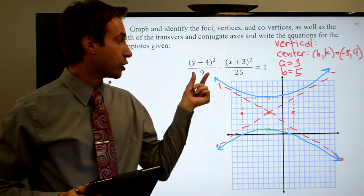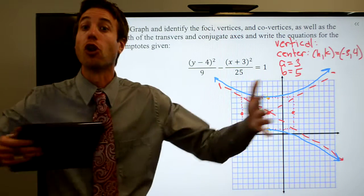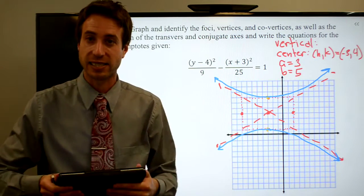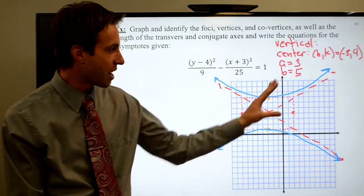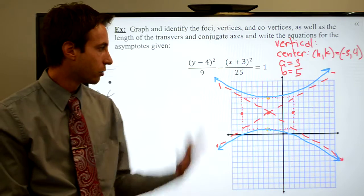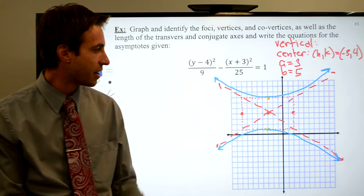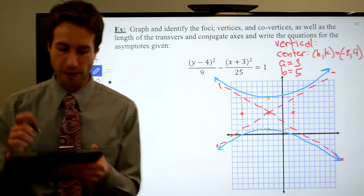If the transverse axis were longer than the conjugate axis, then you get kind of those narrower parabolas. So anyway, there it is. There's my hyperbola. Looks awesome. There's our graph. Let's go ahead and pull all the information off of it that we need.